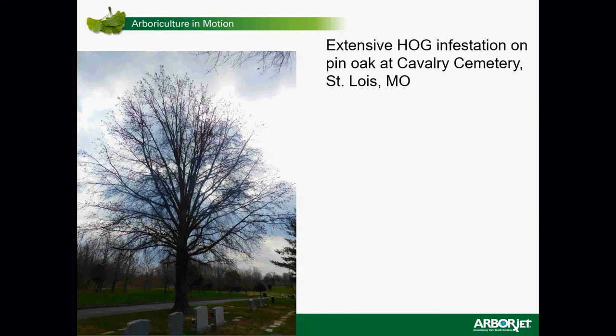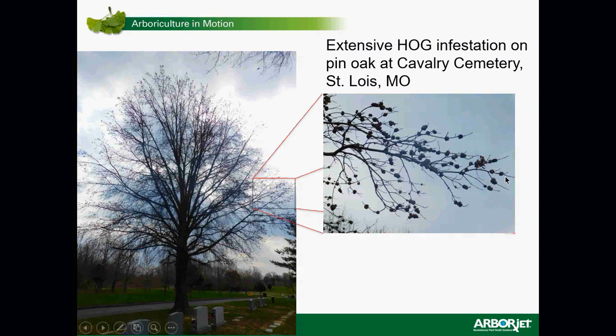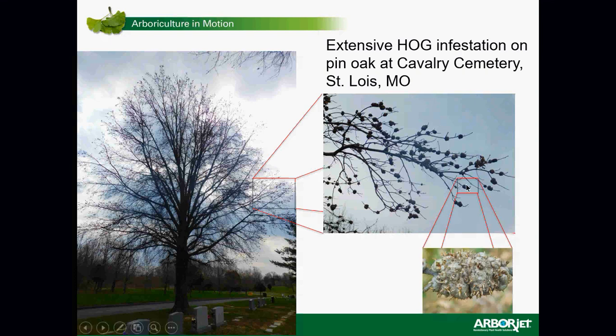This is a tree that we were evaluating over in St. Louis just a few weeks ago. You can see that the leaves hadn't emerged, but all those little black dots are galls that have grown on the tips of the branches. Each of those black dots is one of these large horned oak galls. A few of these galls is no big deal, but when you have hundreds and hundreds of galls on these branches, frequently it weighs down on the branches causing breakage — and the galls can restrict the movement of water and nutrients to the leaves, sometimes causing dieback and even tree mortality.